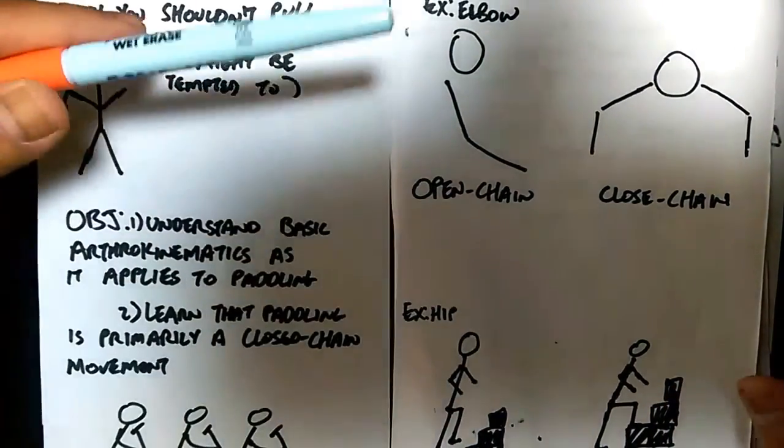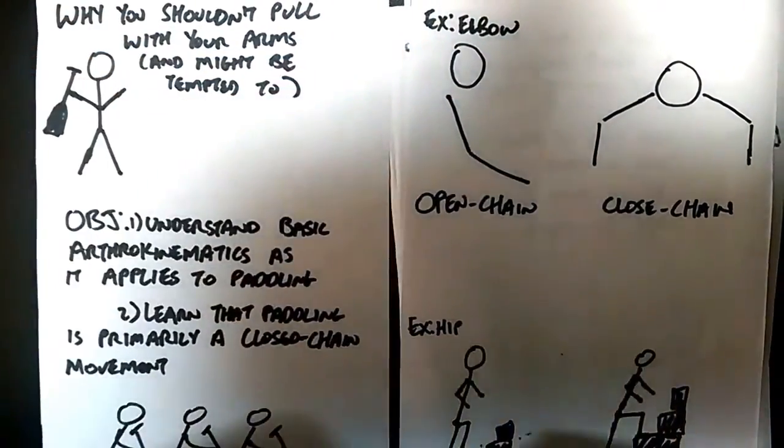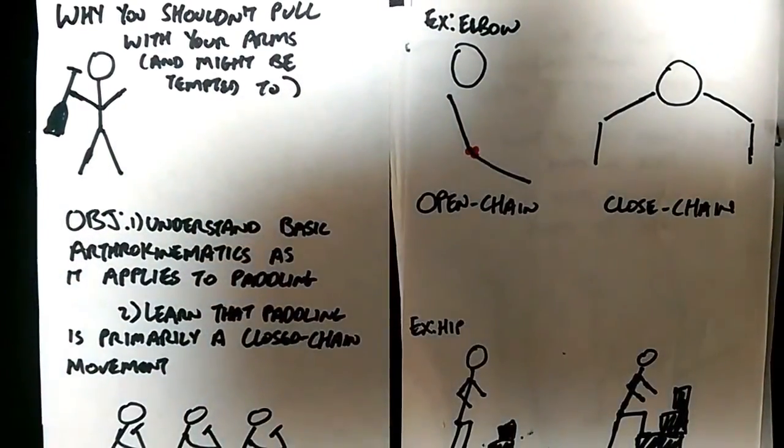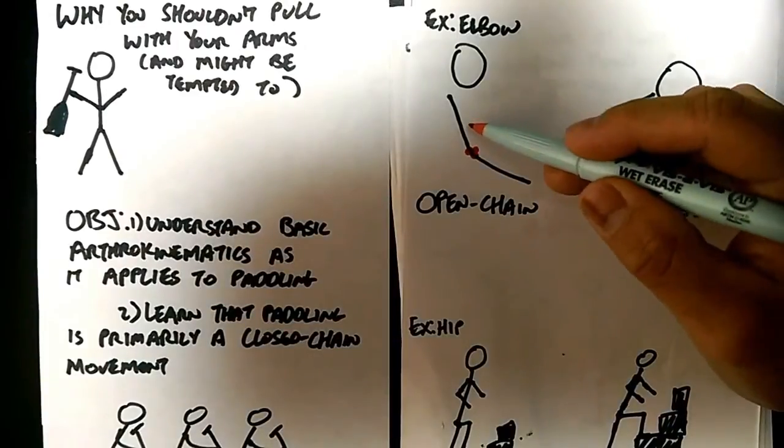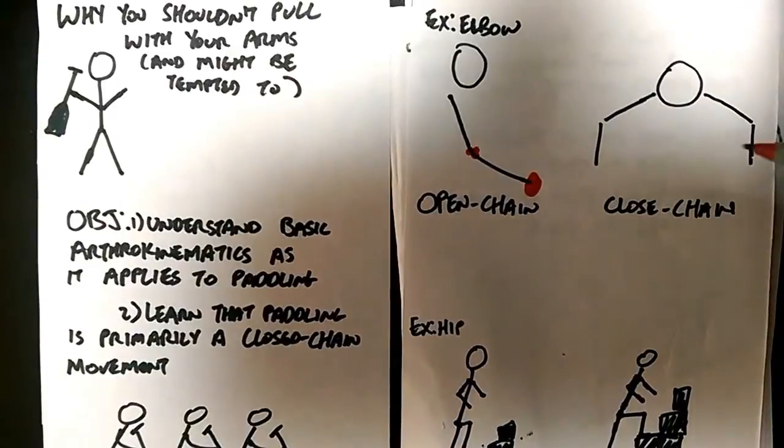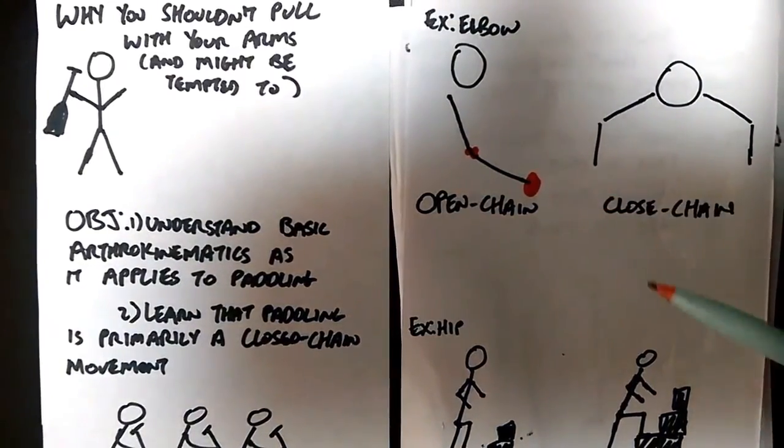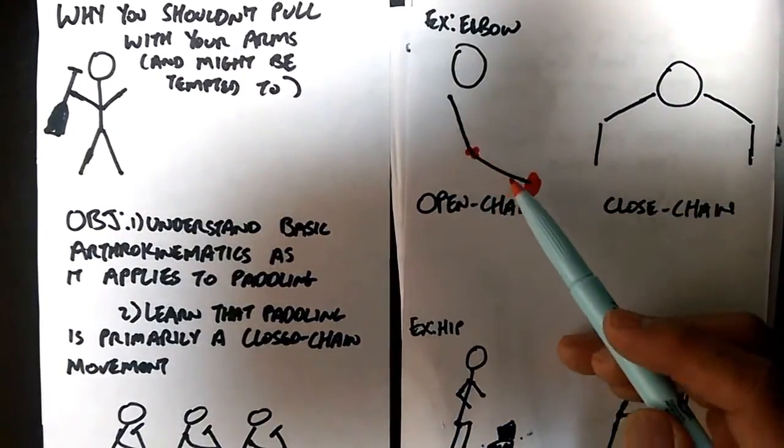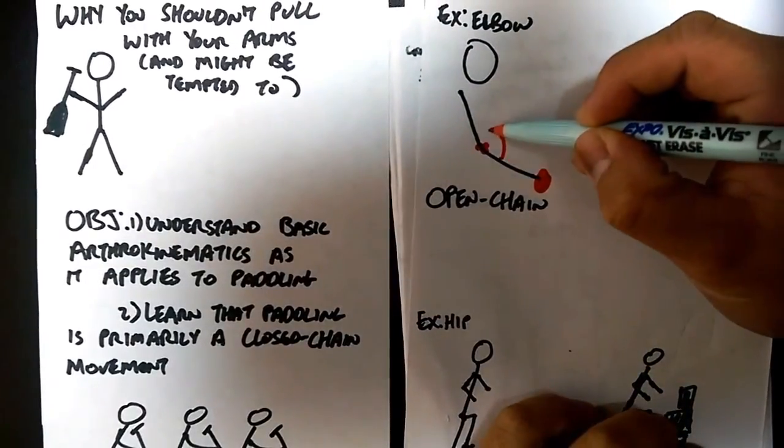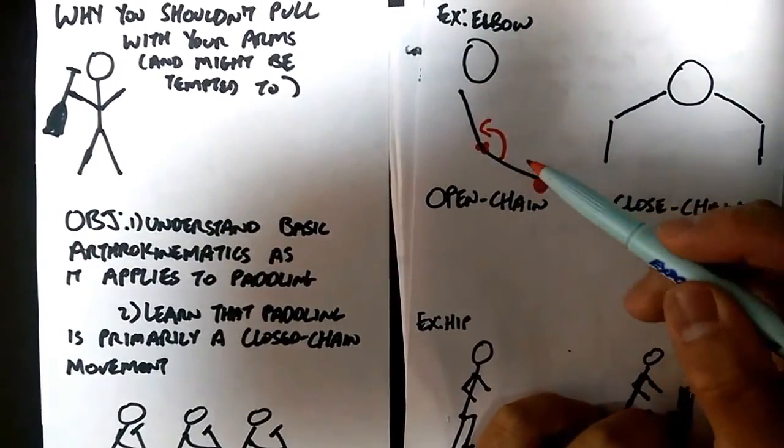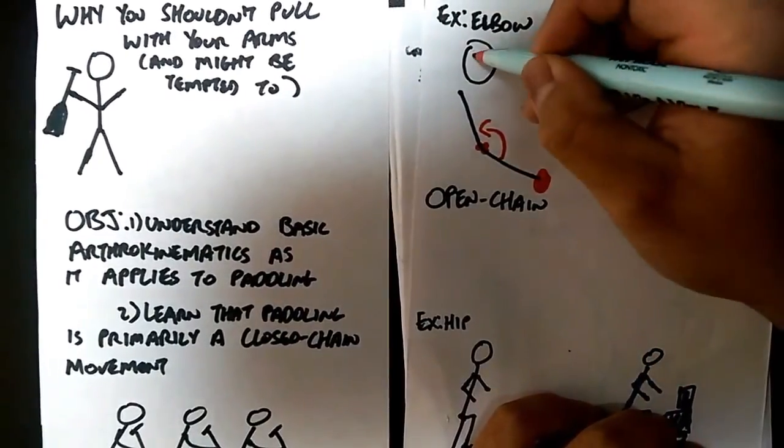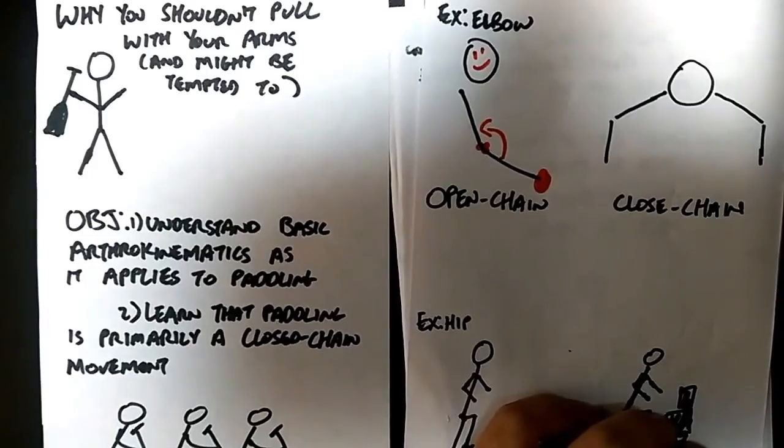Alright, so let's look here first. We're going to be looking at the elbow joint. If I'm doing a bicep curl and looking this way, which part of my arm is moving? This part or this part? Well the answer is this part, right? Your forearm, when you do a bicep curl, is moving towards your arm so that you can impress the ladies.